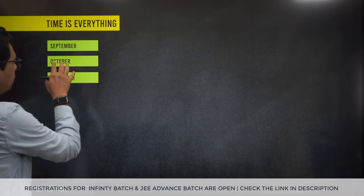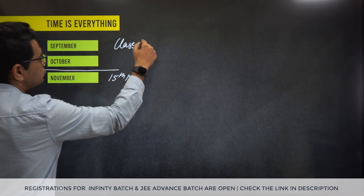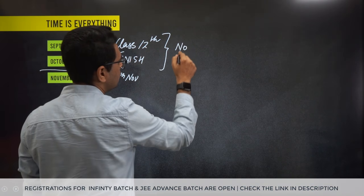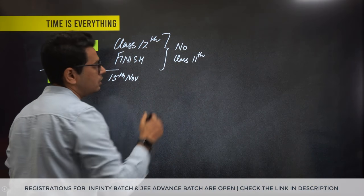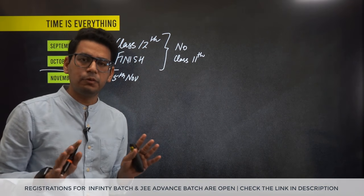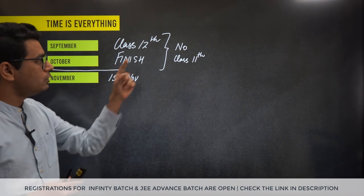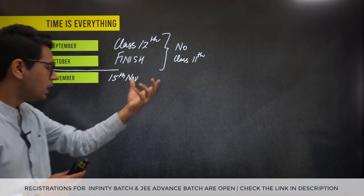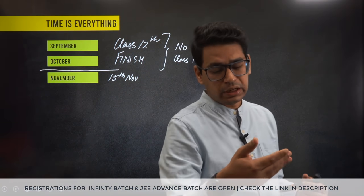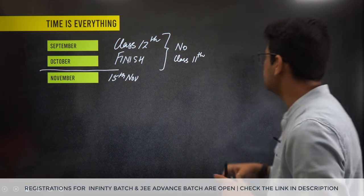I have written just 3 months — September, October, and up to 15th of November. These are the months you should try to finish class 12th. When I say finish class 12th, no class 11th during this time. Class 12th syllabus should ideally be done by 30th October, but we are giving you 15 extra days so you can cover it at a rapid speed.